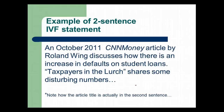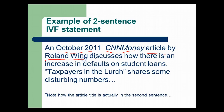So here's an example of a two-sentence IVF statement: 'An October 2011 CNN Money article by Roland Wing discusses how there is an increase in defaults on student loans. Taxpayers in the Lurch shares some disturbing numbers...' This is an example of the beginning of a summary paragraph. In the first sentence I have the date, the source, the genre, the writer's name, and my verb choice. Then I have the main idea of the article. In the second sentence I share the article title in quotation marks and continue with some of the key points. That's one way to make the first sentence not quite as unwieldy and awkward.